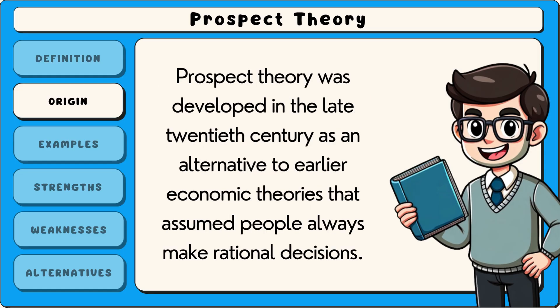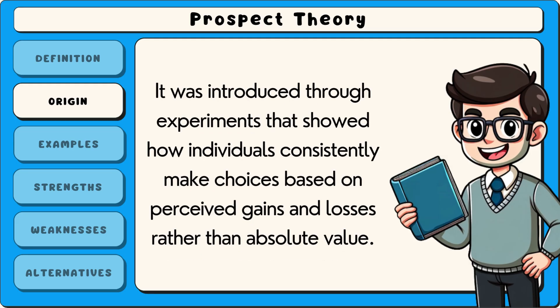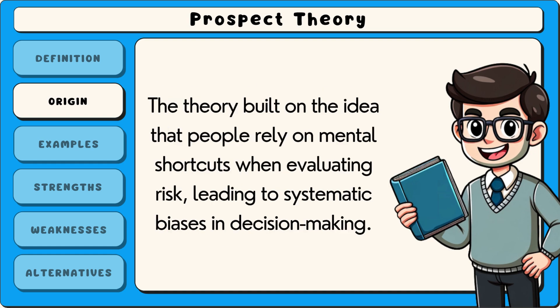Prospect theory was developed in the late 20th century as an alternative to earlier economic theories that assumed people always make rational decisions. It was introduced through experiments that showed how individuals consistently make choices based on perceived gains and losses rather than absolute value. The theory built on the idea that people rely on mental shortcuts when evaluating risk, leading to systematic biases in decision making.